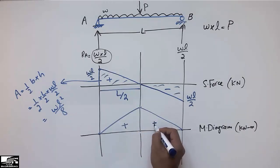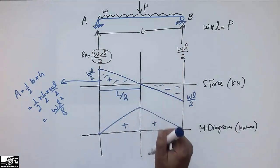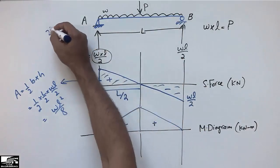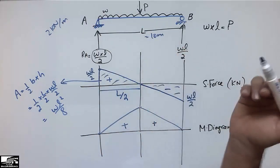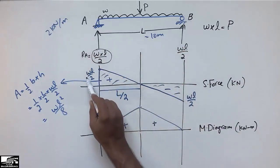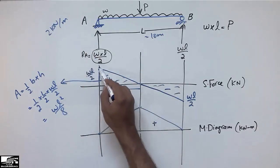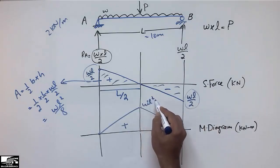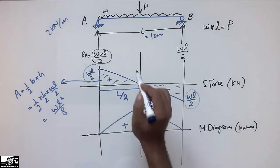This is how to find the shear force and bending moment diagram for a simply supported beam with a uniformly distributed load. You can substitute any value — for example, W = 2 kN/m and L = 10 m. Dividing by 2 gives the shear force value of WL/2, and using WL²/8 gives the maximum bending moment, which always occurs at the midpoint.